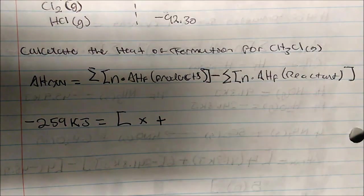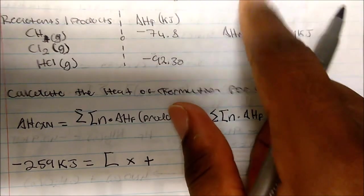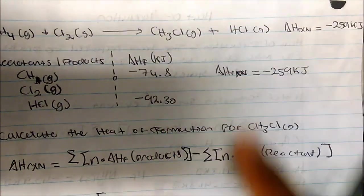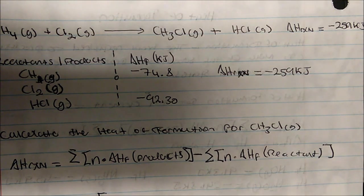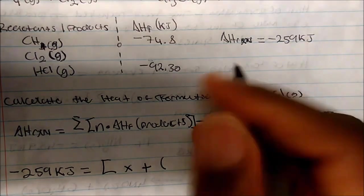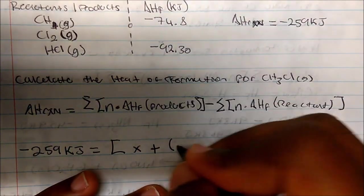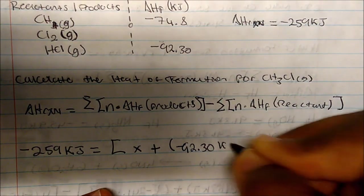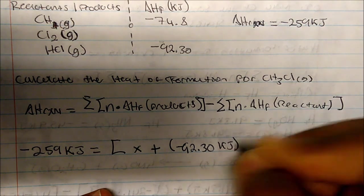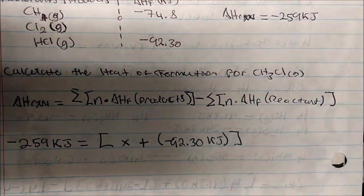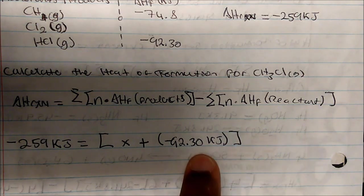We add that to the next product, hydrochloric acid gas. We have 1 mole, so we add X plus the heat of formation of HCl gas, which is negative 92.30 kilojoules. That constitutes our products.